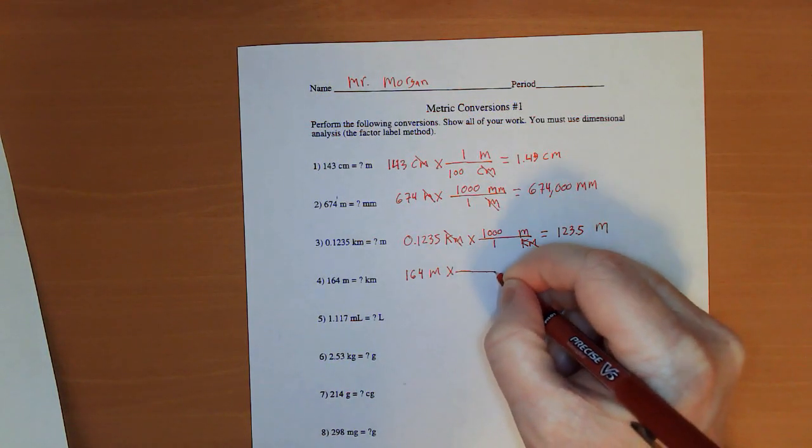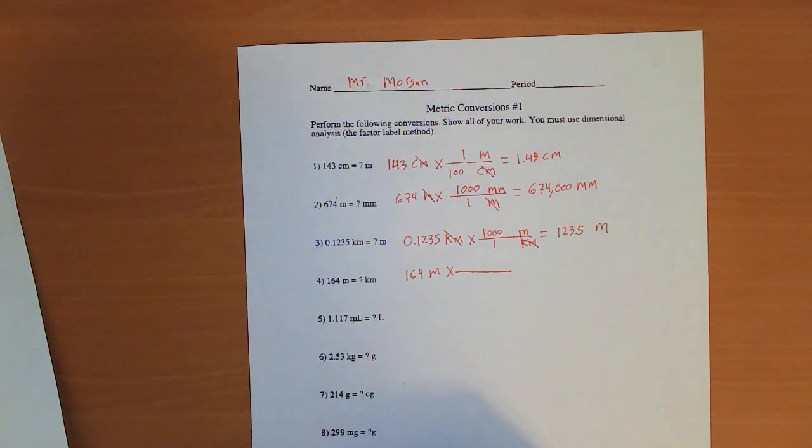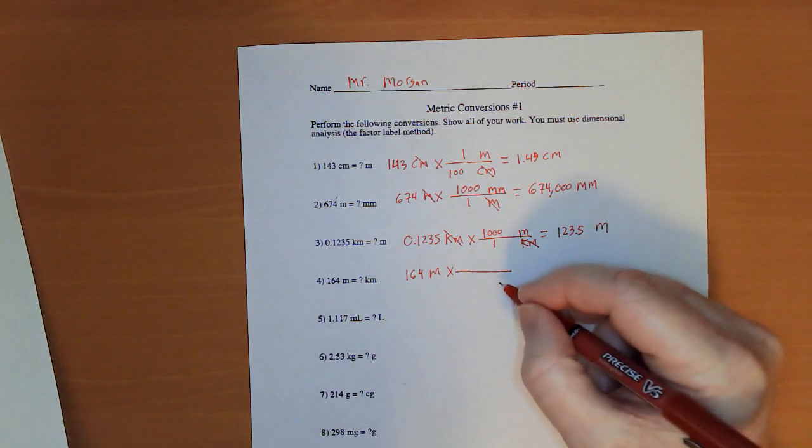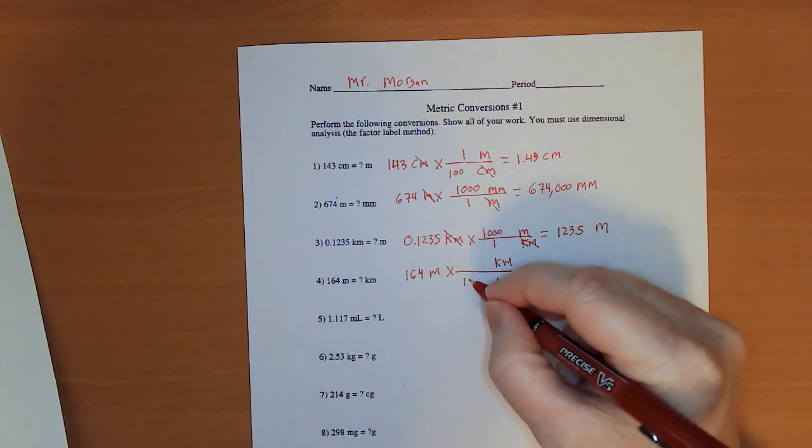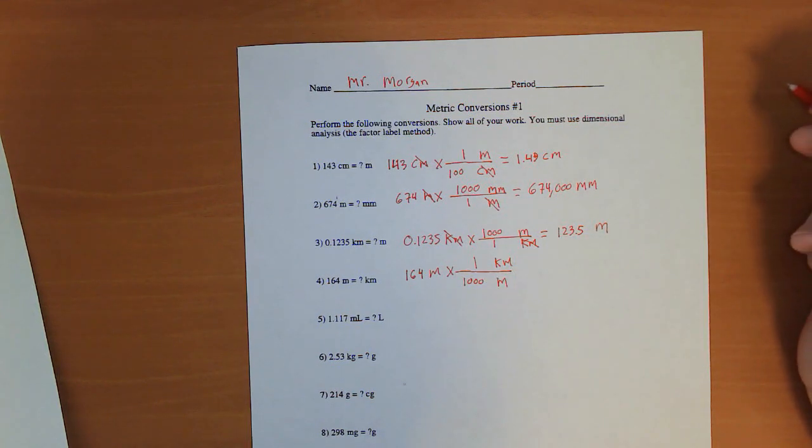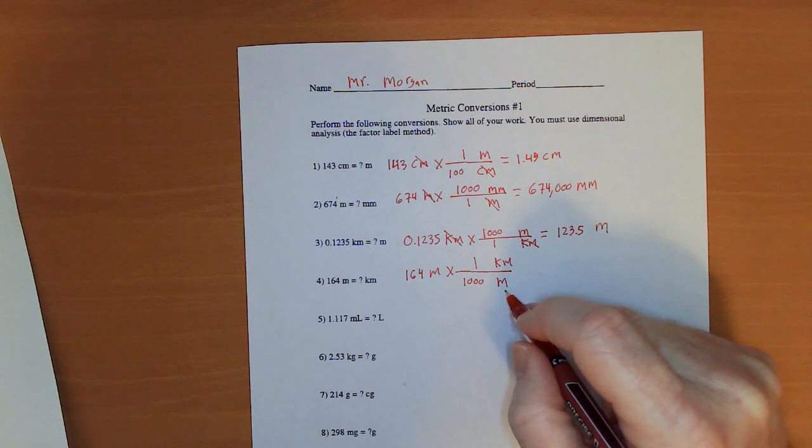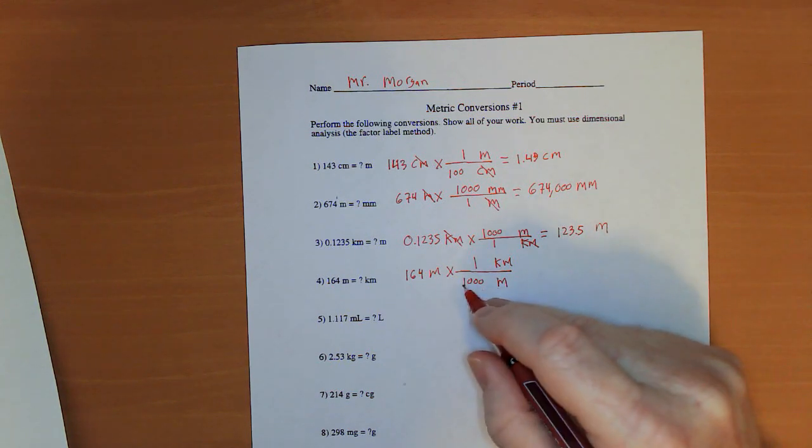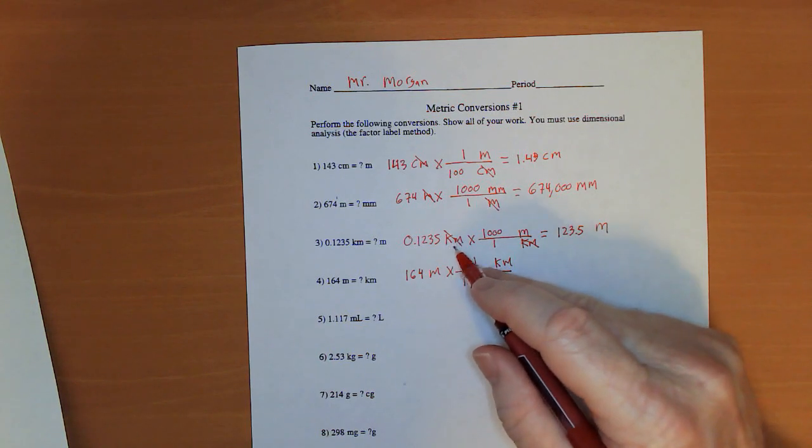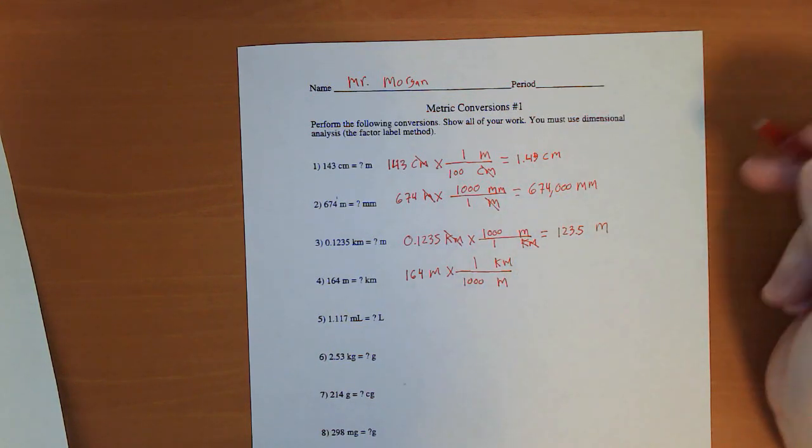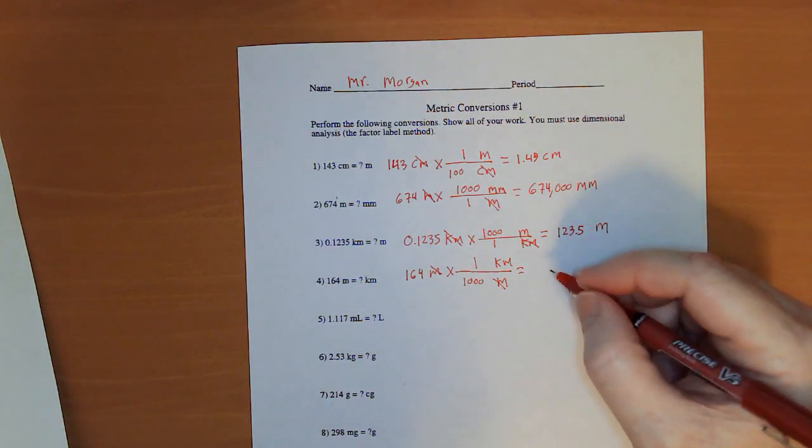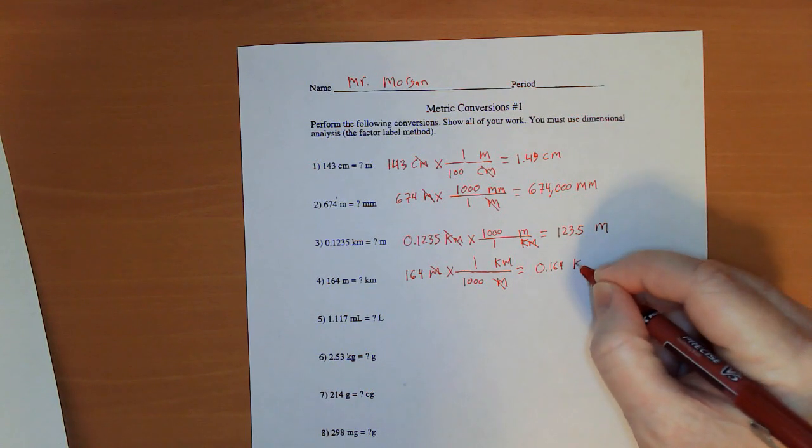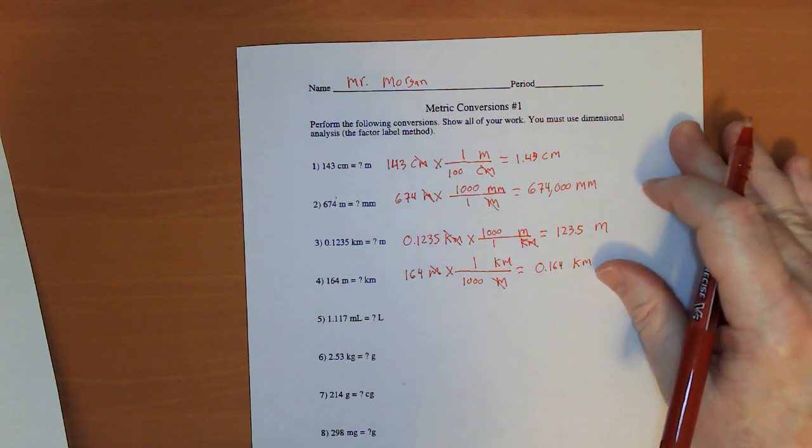164 meters times. And remember, if I'm going fast, just pause the video. Look at the solution for as long as you need to. So, I want to get rid of meters. I want to get to kilometers. This time, there's 1,000 meters in a kilometer. That's always the conversion. It's just that since I wanted meters to cancel this time, meters and the 1,000 are on the bottom. Now, in this previous question, I wanted kilometers to cancel, so 1 and the kilometer was on the bottom. The meters cancels. And I have 164 divided by 1,000 or 0.164 kilometers.